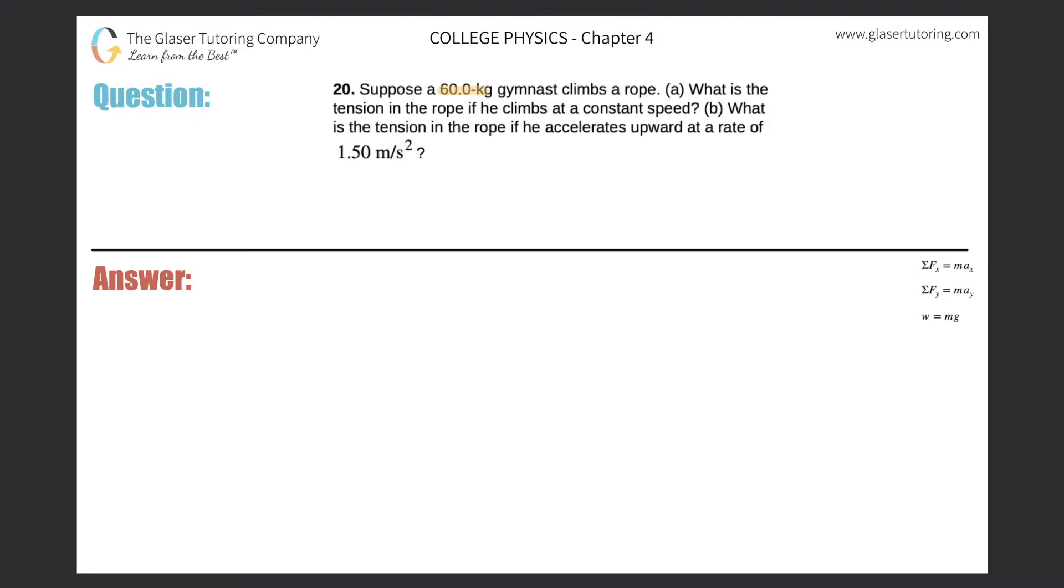Problem 20: Suppose a 60 kilogram gymnast climbs a rope. What is the tension in the rope if he climbs at a constant speed? Alright, so first, a free body diagram. Let's draw a set of axes. This particular point in the middle will represent the gymnast.